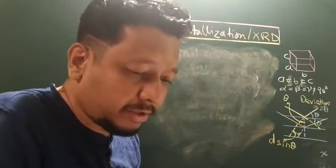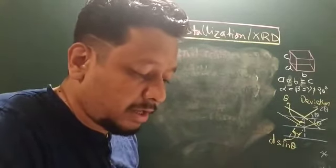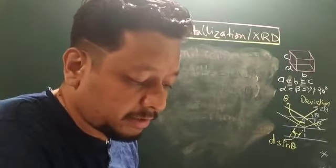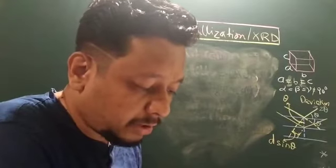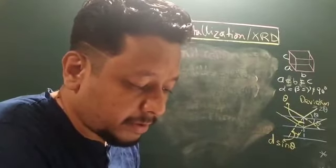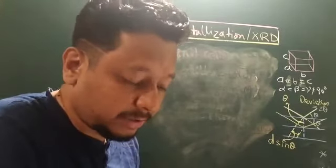Then you have monoclinic crystals: A not equal to B not equal to C, alpha equals gamma equals 90, beta not equal to 90. Example: Glauber salt, that is Na2SO4·10H2O, and even oxalic acid.